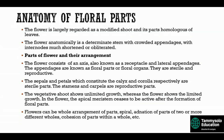The flower consists of an axis also known as a receptacle, and lateral appendages known as floral parts or floral organs. These are sterile and reproductive. The sepals and petals, which constitute the calyx and corolla respectively, are the sterile parts, while the stamens and carpels are the reproductive parts. The vegetative shoot shows unlimited growth whereas the flower shows limited growth — the apical meristem ceases to be active after the formation of floral parts.